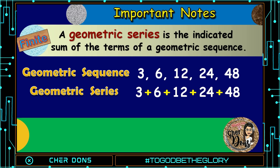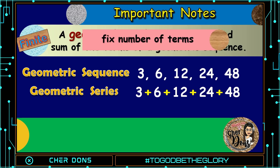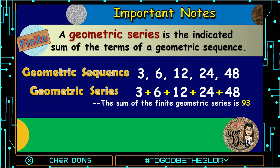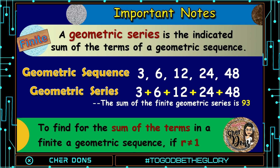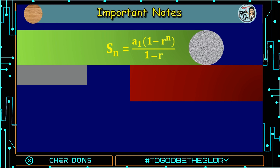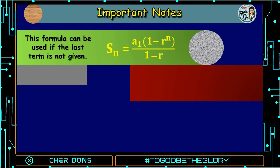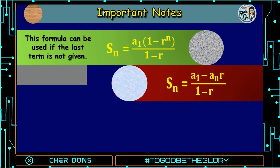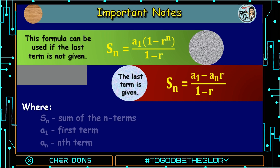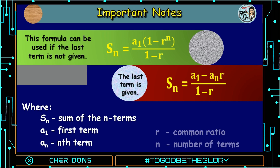How about finite? Finite simply means a fixed number of terms. So the sum of a finite geometric series is equal to 93. To find the sum of the terms in a finite geometric sequence, if r is not equal to 1, we have: S of n is equal to a sub 1 multiplied by quantity 1 minus r raised to n, all over 1 minus r. This formula can be used if the last term is not given. Or, S of n is equal to a sub 1 minus a sub n multiplied by r, all over 1 minus r. This formula can be used if the last term is given. Where: S of n is the sum of the n terms, a sub 1 is the first term, a sub n is the nth term, r is the common ratio, and n is the number of terms.